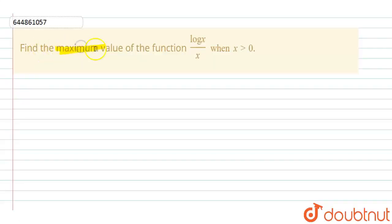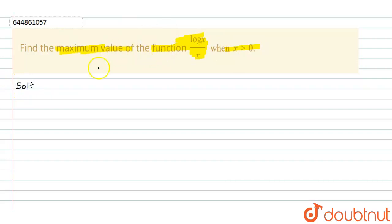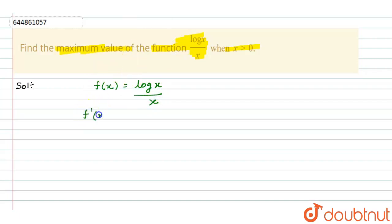The question is: find the maximum value of the function log(x) divided by x, when x is greater than 0. In this question we have to find the maximum value of the given function. The given function is f(x) = log(x) divided by x, and to find the maximum value we need to find f'(x) first.